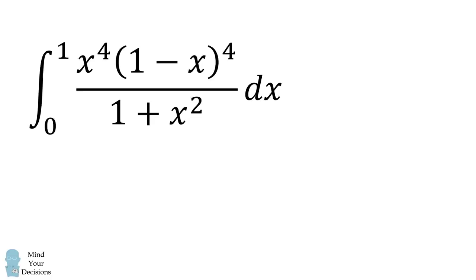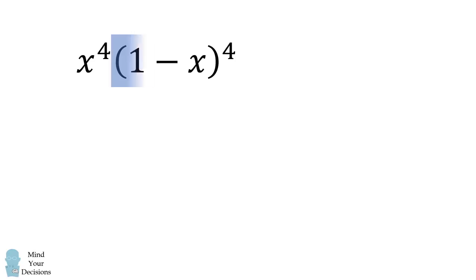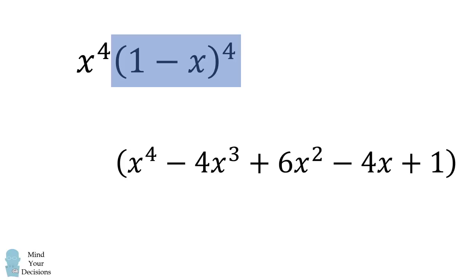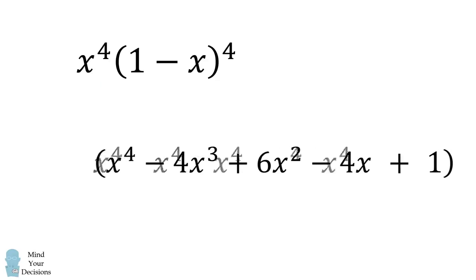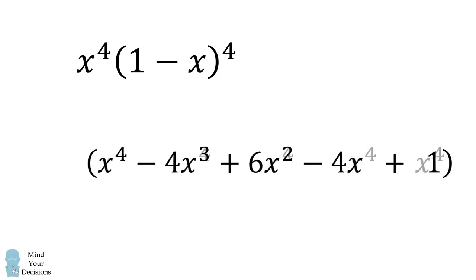To solve this problem, we will focus on the integrand. In particular, we'll simplify the numerator. We can expand the binomial by using the binomial theorem. We then multiply each term by x to the power of 4. We'll distribute through, and then we will simplify term by term.